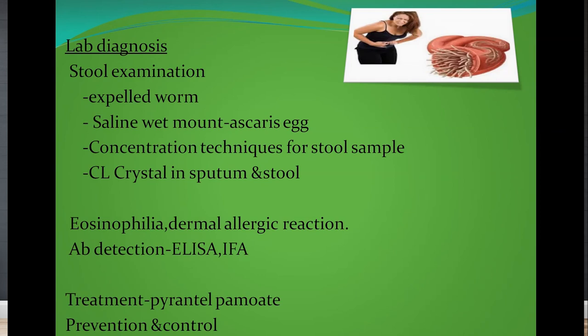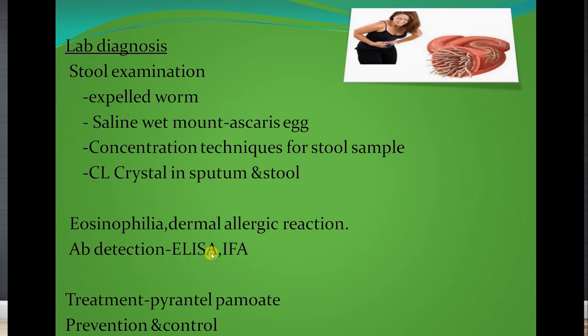For laboratory diagnosis of ascariasis, collect a stool sample. In the stool you may find expelled worms, or in a saline wet mount you can find eggs. Charcot-Leyden crystals may be found in sputum as well as stool samples. Non-specific tests include eosinophilia or allergic reactions against the parasitic antigen. Antibody detection can be done by ELISA or immunofluorescence. Treatment is given by parenate pamoate (pyrantel pamoate).